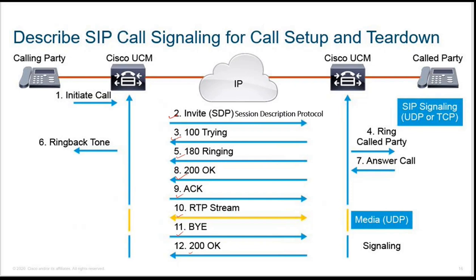But before that, we can see an overview here. When the calling party initiates a call, it goes to the CUCM. The CUCM makes sure that it sends an INVITE message to the called party. The called party can be directly a phone within the enterprise or it can be a gateway, and so on. So it will send the invite to the destination with SDP.